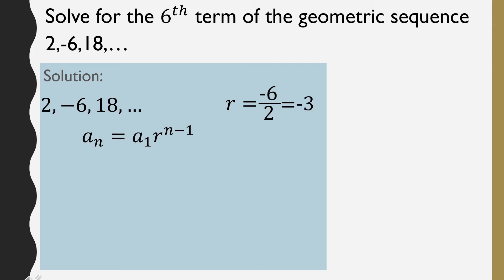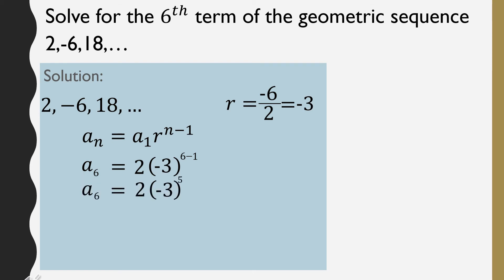Next, we substitute the values into our formula. N is 6 since we are solving for the 6th term, the first term is 2, and R is negative 3. So we have a sub 6 equal to 2 times negative 3 raised to the power of 6 minus 1. Simplifying, subtract the exponents: 6 minus 1 is 5.